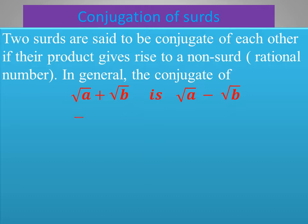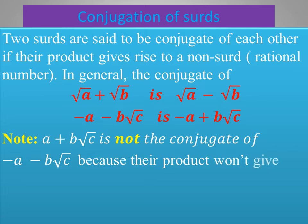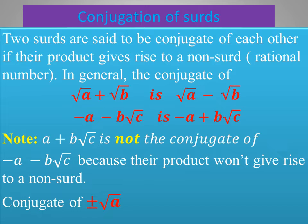Also, the conjugate of −a − b√c is −a + b√c. Note: a + b√c is not the conjugate of −a − b√c because the product won't give rise to a non-surd. The conjugate of ±√a is ±√a.